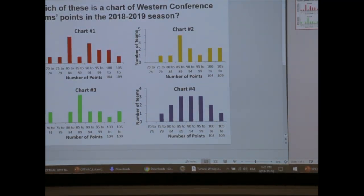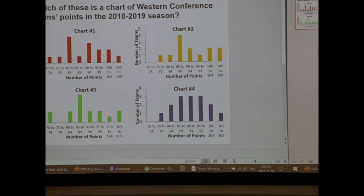Which one of these four graphs do you think is a chart of last year's Western Conference standings? Who thinks it's A? No one for A. Chart one? A few people — two people? Chart two? Anyone for chart two? Chart three? A lot of people for chart three. And how about chart four? A lot of people for chart four.